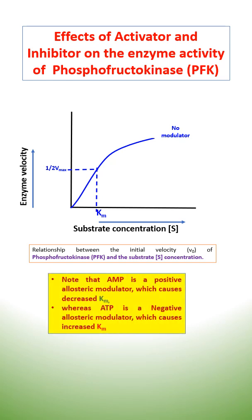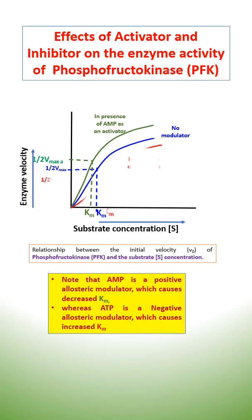AMP is a positive allosteric modulator, therefore it causes a decreased KM value, whereas ATP is a negative allosteric modulator, therefore it causes an increased KM value.